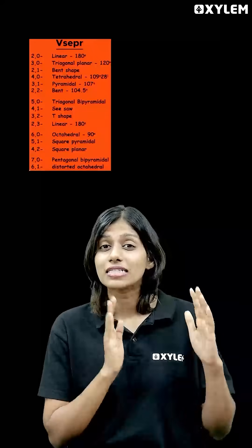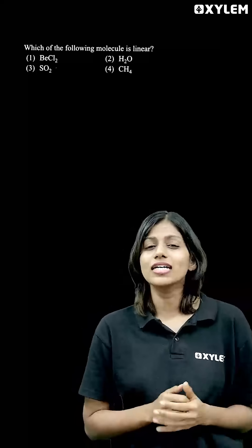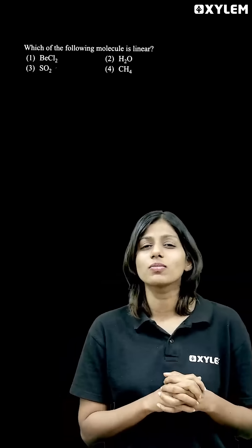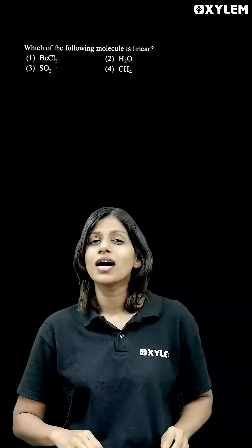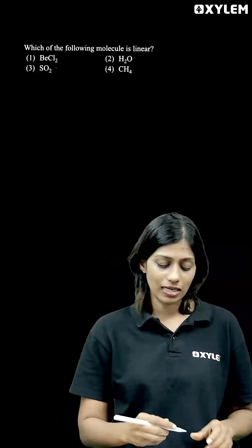Questions can be asked directly from this chart. See a question here: which of the following molecule is linear? We need to look at the electron pairs, that is the bond pairs and the lone pairs in numbers.